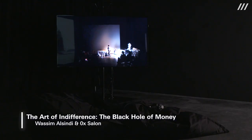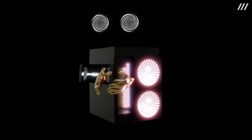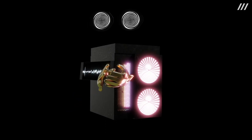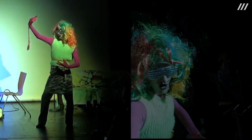The project The Art of Indifference by Wassim Alcindi and Zero X Salon is twofold. One part was presented in the exhibition Rewild in Rome at Maxi. The second part, The Black Hole of Money, is presented here — a documentation of a theatre play staged in Copenhagen. It develops a dystopian narrative on the society that will come out of the increasing dominance of cryptocurrency, particularly Bitcoin.